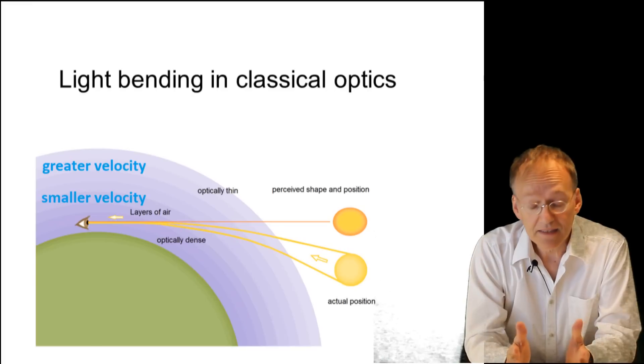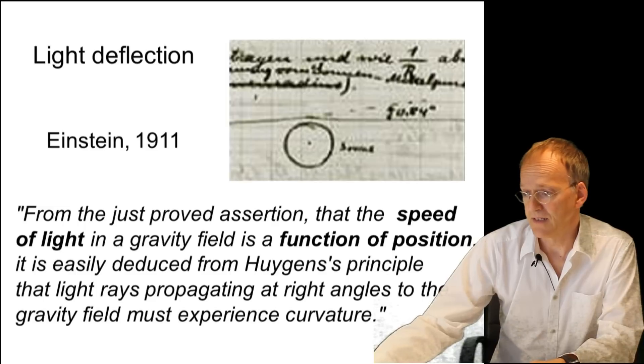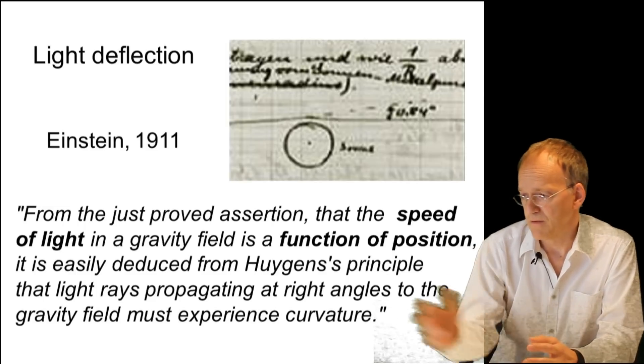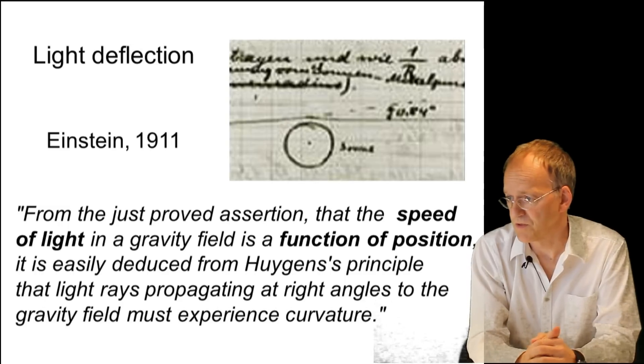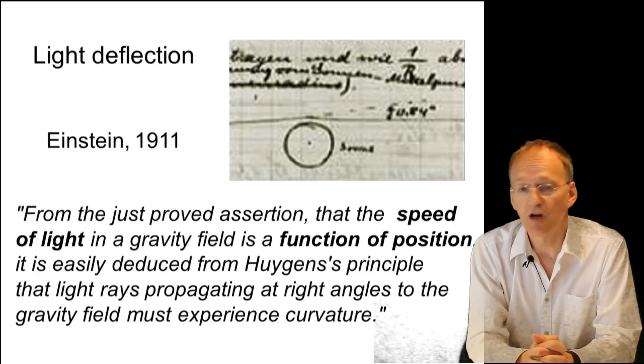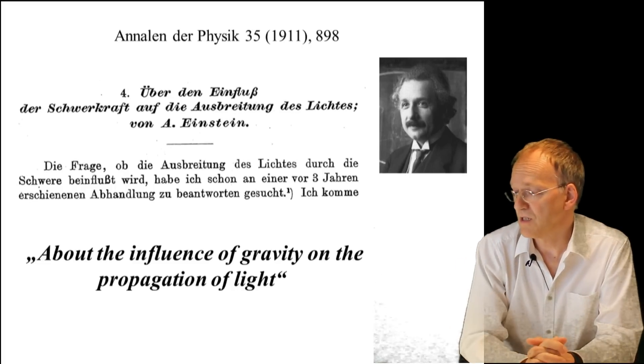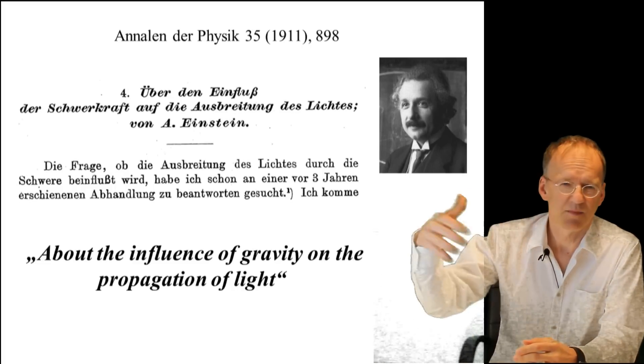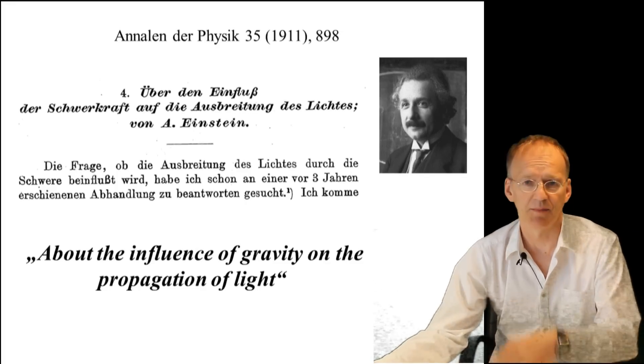That he did indeed start from this idea of variable speed of light is extensively documented. You have this paper here, the proof assertion that the speed of light is a function of position - that means variable speed of light. This is the original paper in Annalen der Physik in 1911. The attempt started even earlier in 1907.